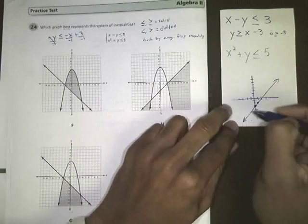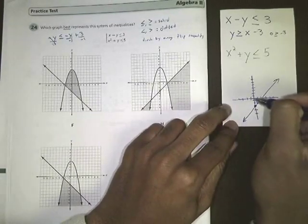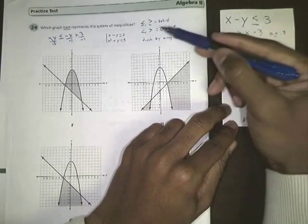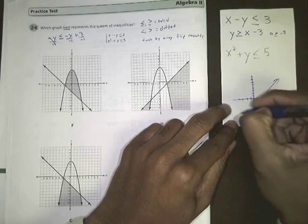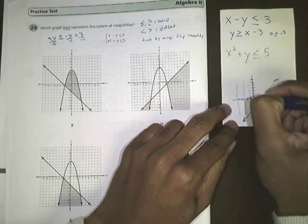So you're going to end up shading to the side that has 0, 0, that ordered pair on it. Or, if you have greater than, the trick is that you need to shade above it. So we would start off by shading up here.